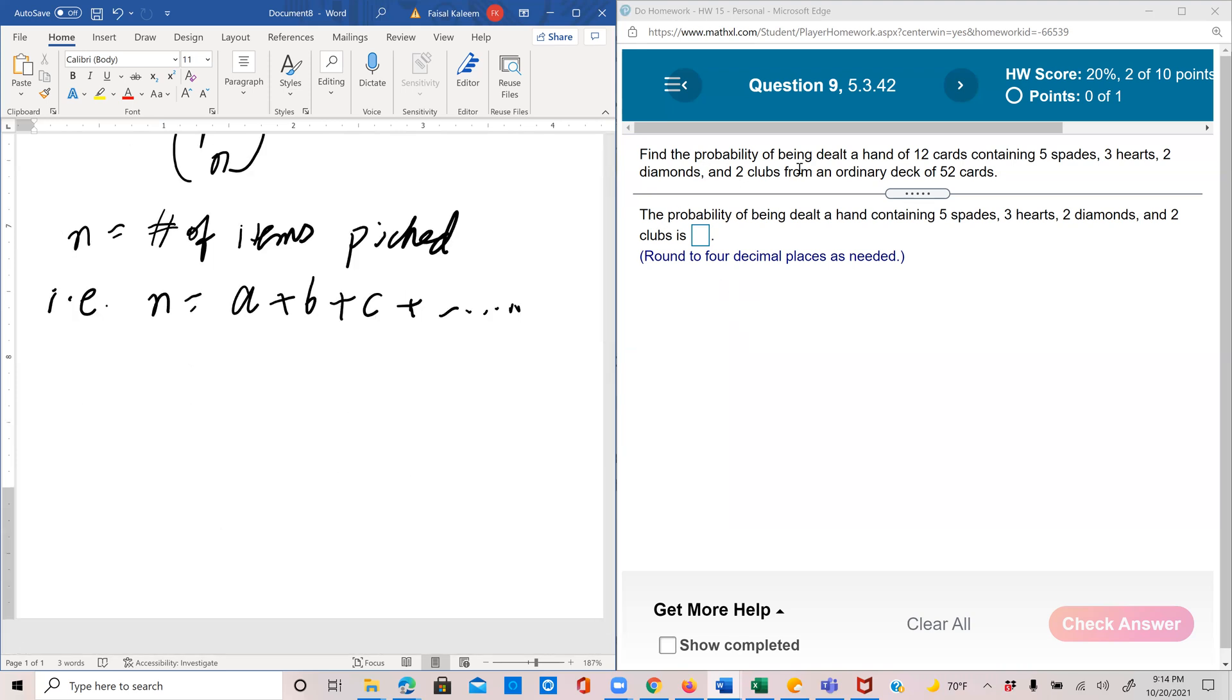Find the probability of being dealt a hand of 12 cards containing five spades. So you want probability five spades, three hearts, two diamonds, two clubs.